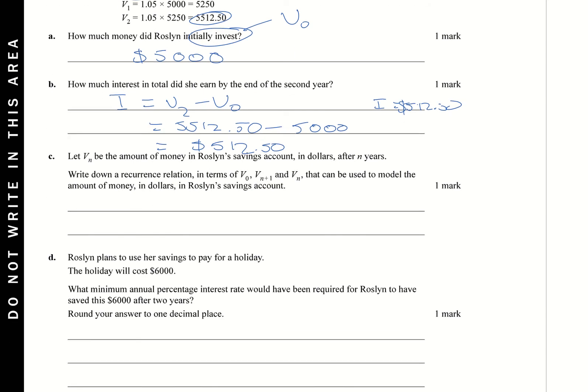So now let VN be the amount of money in her account in dollars after N years. Recurrence relation. So in a recurrence relation, we have to write it in a very specific format. And so the format we need is basically going to be V0 equals a number. In this case, we know that V0 is 5,000. And then we're going to write VN plus 1, because that's the term following on from VN.